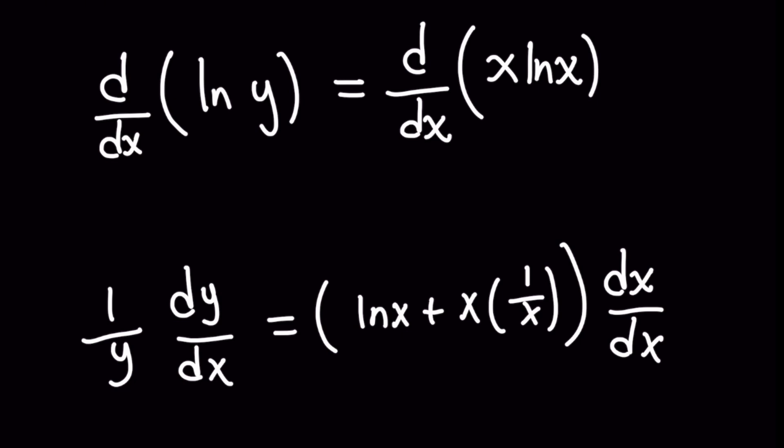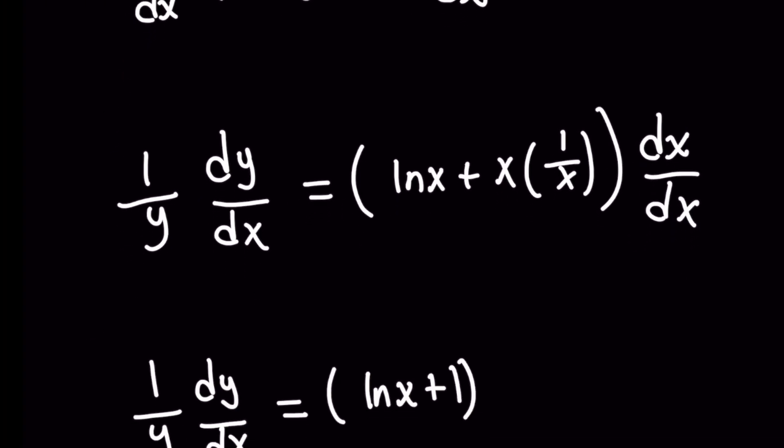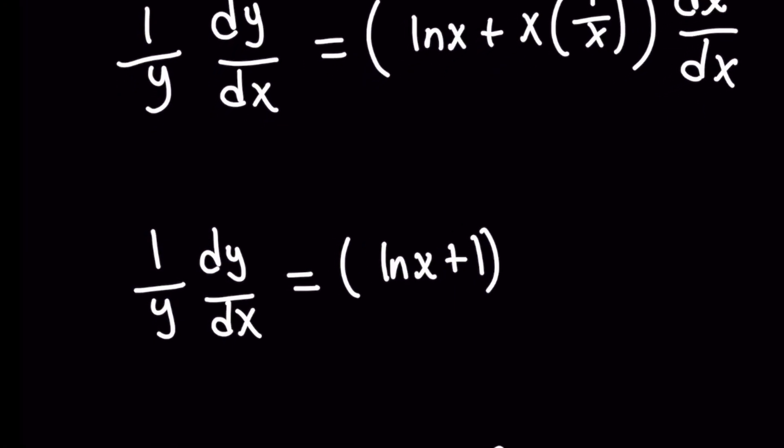Now it might look a little bogus to you to have dx over dx, but I want you to think of this as the following: the rate of change of the differential x with respect to itself is simply 1, right? So we're going to go ahead and just knock that out, and this becomes simpler to work with.